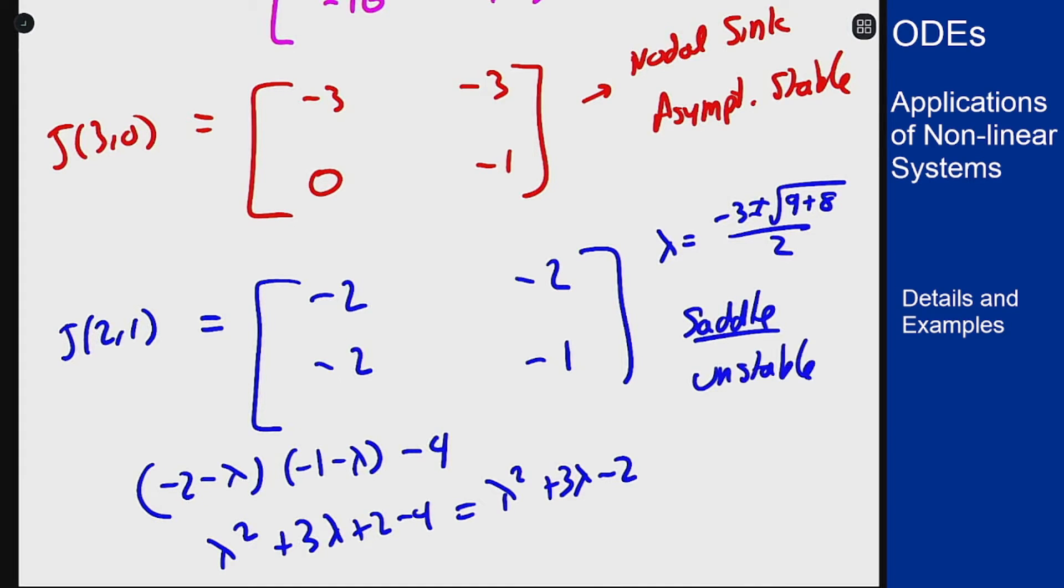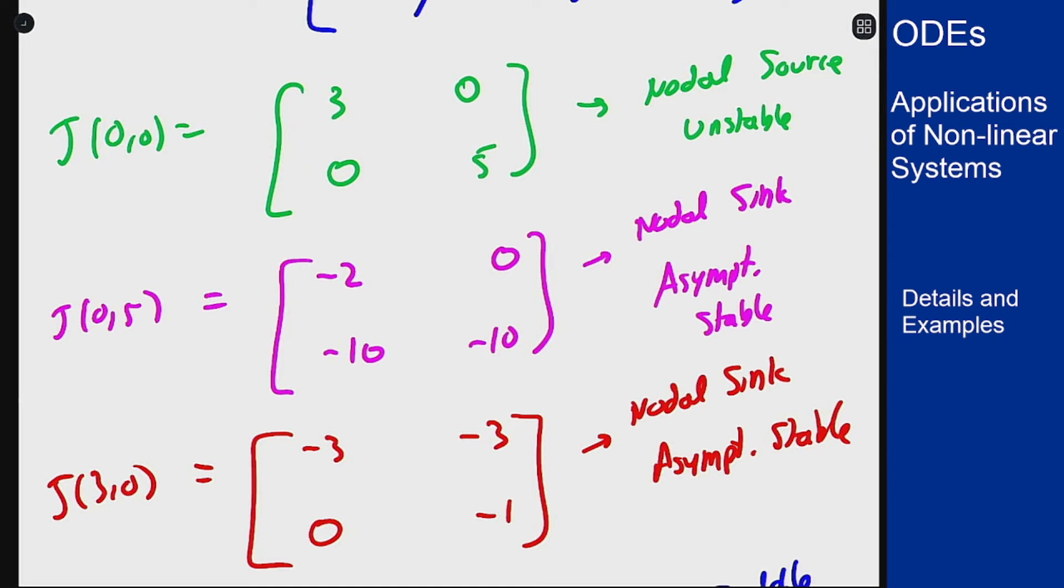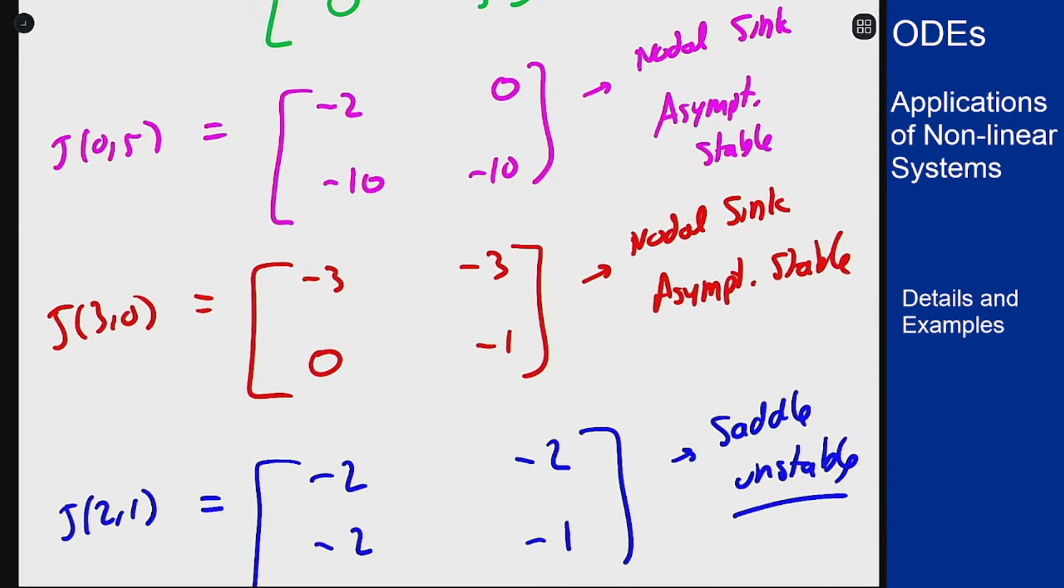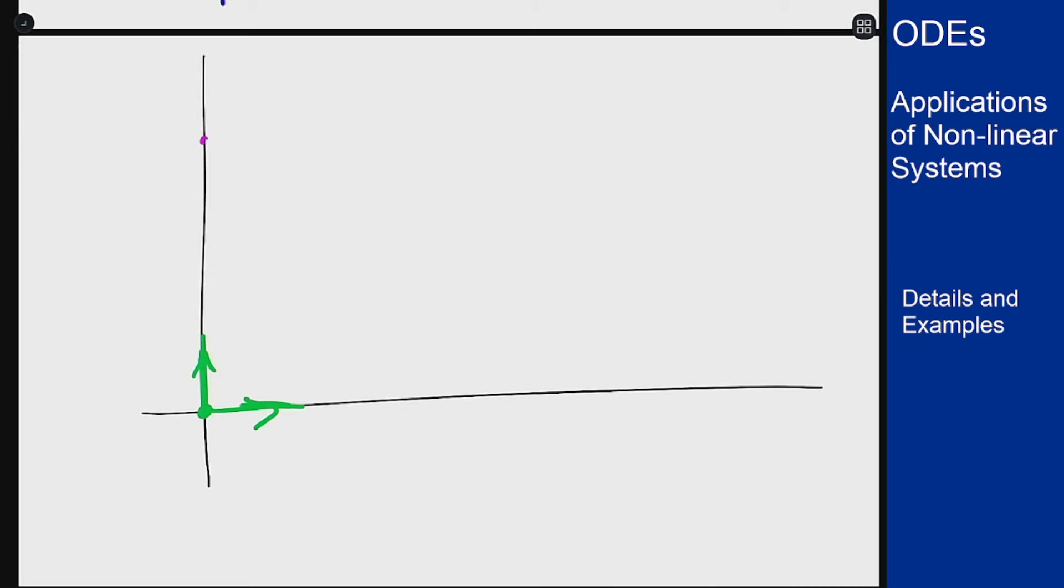Now we can go ahead and plot all of these. We get a nodal source at 0,0 with eigenvalues in its coordinate directions. Looks like that. We have a nodal sink at 0,5 and 3,0. So 0,5 and 3,0.